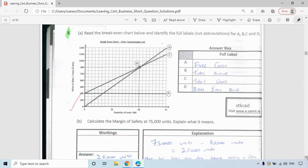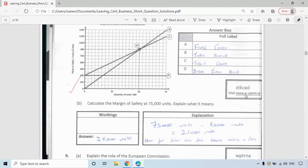You're then asked to calculate the margin of safety at 75,000 units. So you go to 75,000 units. Your margin of safety is how far sales can fall before the business starts to lose money. So 75,000 minus the 50,000 is 25,000 units. So sales can fall by 75,000 to 50,000, which is 25,000 units before the firm will start to make a loss.